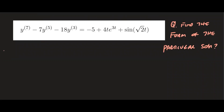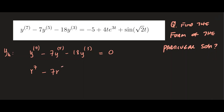We are looking for y sub h. We're going to set the equation equal to zero: y to the seventh derivative minus seven y to the fifth derivative minus 18 y to the third derivative equals zero. Now we write out the characteristic polynomial: r to the seventh power minus seven r to the fifth minus 18 r to the third equals zero.